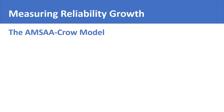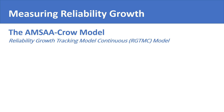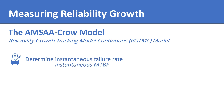The MSA-Crow model is the second model we are going to look at. It is also called the Reliability Growth Tracking Model Continuous, or RGTMC model. The MSA-Crow model first estimates the instantaneous failure rate, and hence the instantaneous mean time between failures, based upon a test phase. The model assumes that the test is a good representative of how the equipment would behave outside the test. Therefore, the model calculates certain parameters from the test, namely beta and gamma.